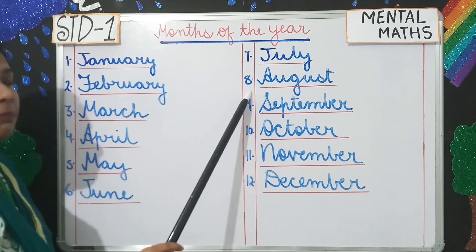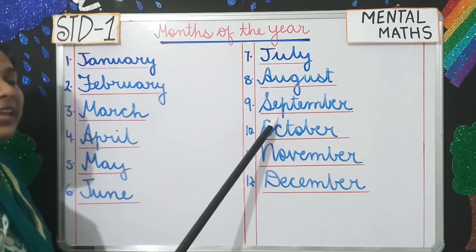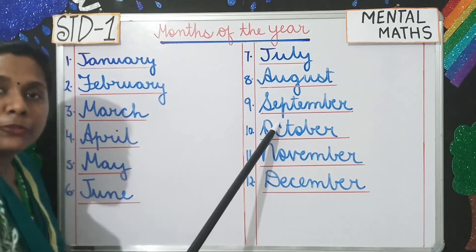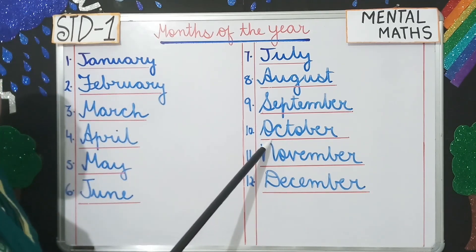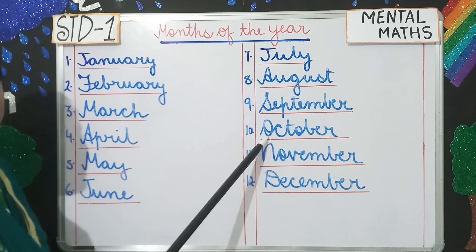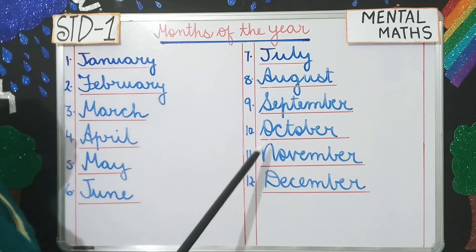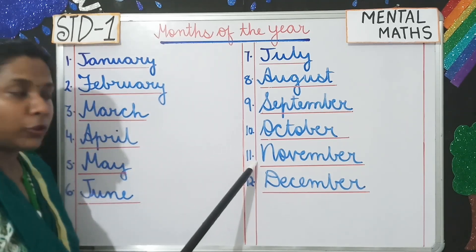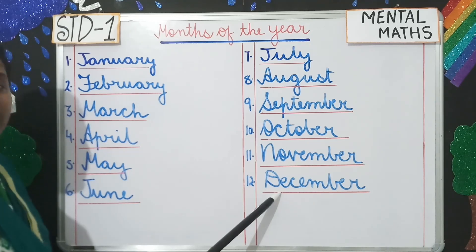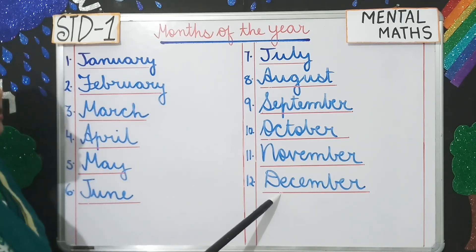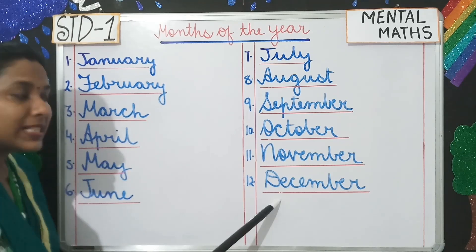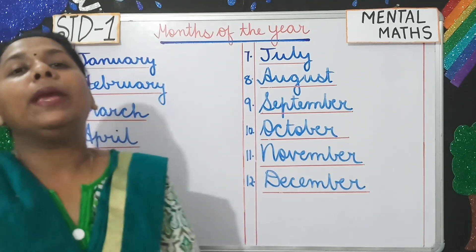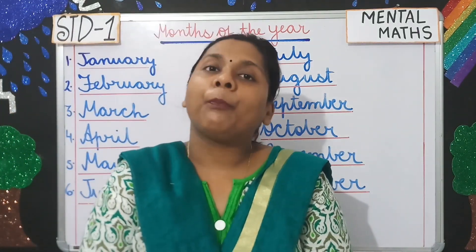August is the 8th month of the year. Then we have September — September is the 9th month of the year. Then we have October — October is the 10th month of the year. Then November — November is the 11th month of the year. And then at last we have December, which is the 12th month, or the last month of the year. All together we have 12 months in a year.